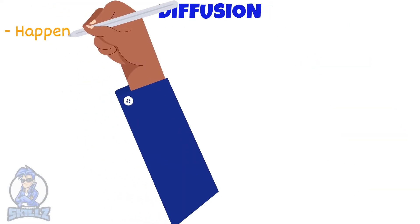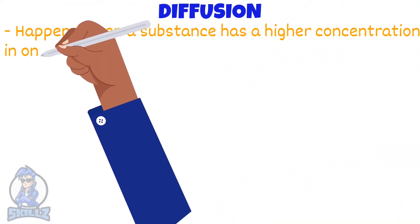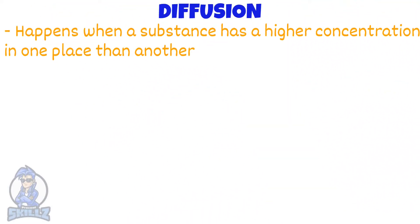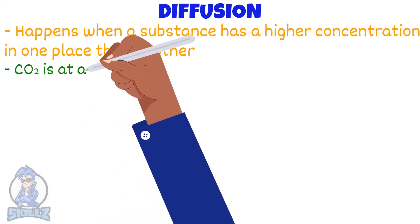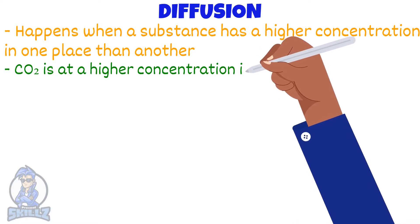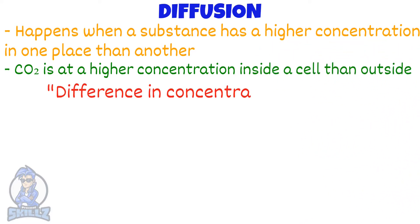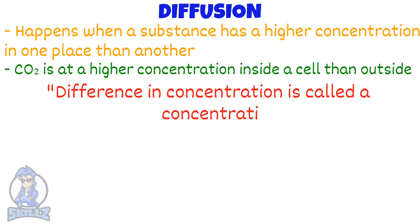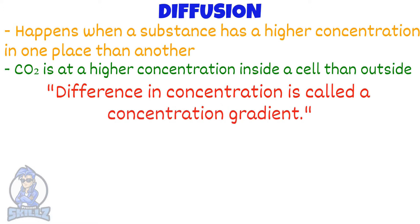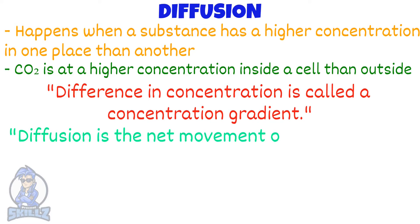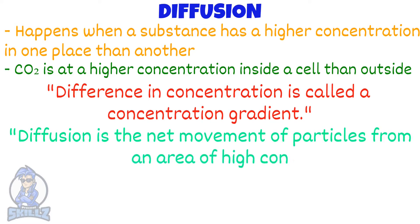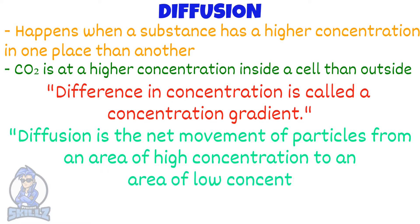Diffusion happens when a substance is more concentrated in one place than another. One example is if a cell is producing carbon dioxide — the concentration of carbon dioxide will be higher inside the cell than outside, and the difference in concentration is called a concentration gradient. Diffusion is the net movement of particles from a region of high concentration to low concentration, that is, down a concentration gradient.